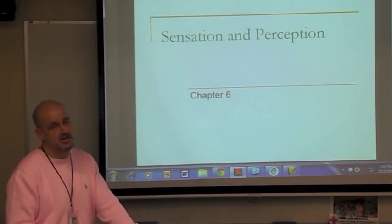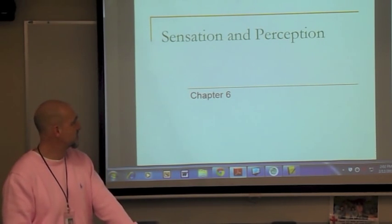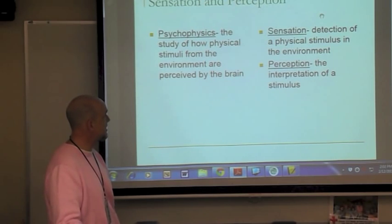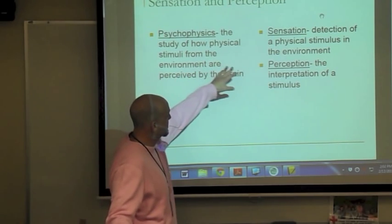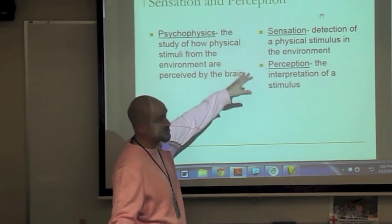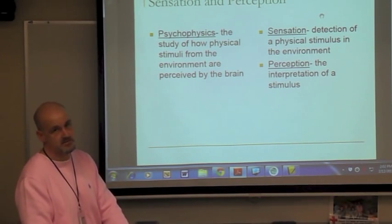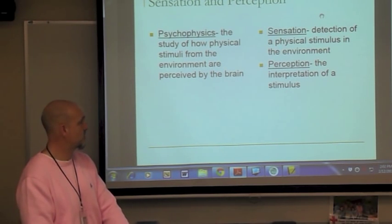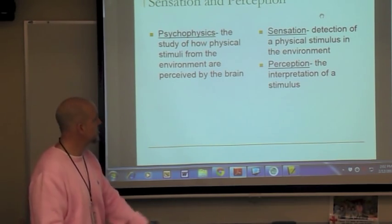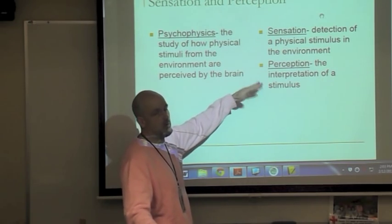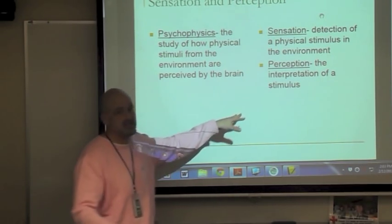This chapter is quite long, so there are a few parts to it. Starting off: psychophysics is the area that studies how physical stimuli in the environment are perceived by the brain. Sensation is using our senses to detect a physical stimulus — for example, coldness, hotness, touch, what we hear, or what we see. Perception is the interpretation of that stimulus.